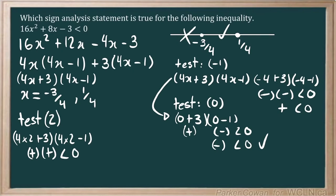0 is not greater than a positive because a positive times a positive is a positive. So that is not correct. So we know it can't be to the right either.